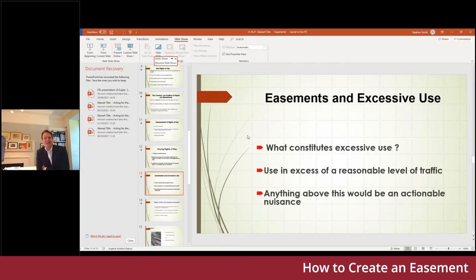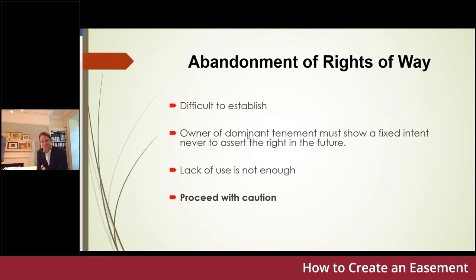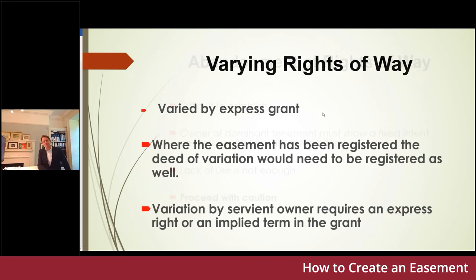Because it's a legal interest in land, to extinguish it you'd need a deed. These cases only arise where people haven't executed a deed saying this easement is no more, so you're trying to imply an intention to abandon out of circumstances where no one has said that's what they're doing — and mere non-use is not enough. I often come across developers who say 'oh we don't have to worry about that, it's an old agricultural right of way that hasn't been used for donkeys' years' — and they plan out an estate over it. That's where Robert and defective title insurance absolutely comes in.